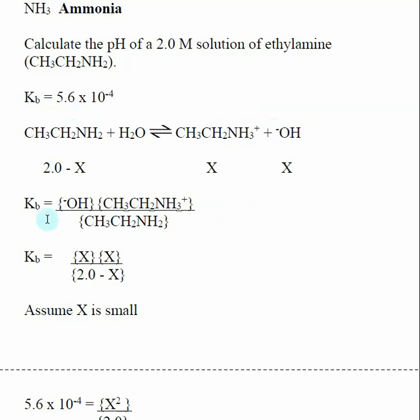So we then come up with our Kb equilibrium expression. So that's products divided by reactants. We don't include water. And we do a similar type of dissociations. We started with 2.0 molar ethylamine. We're going to assume some of that dissociates X. So that's going to be making X of our protonated ethylamine and X amount of hydroxide. So we take these theoretical values. We plug it into our Kb equilibrium expression.